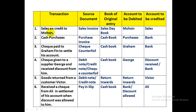For sales on credit to Mohsen, the source document is the sales invoice — this document gives details about the sale of goods on credit. The book of original entry is the sales day book, where credit sales are first recorded. The account to be debited is the trade receivable account of Mohsen, and the account to be credited is the sales account.